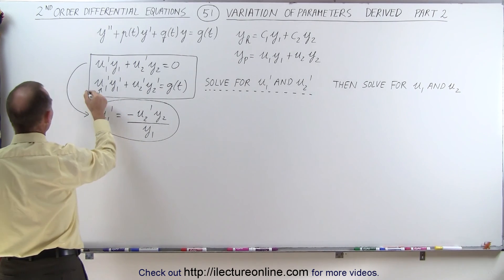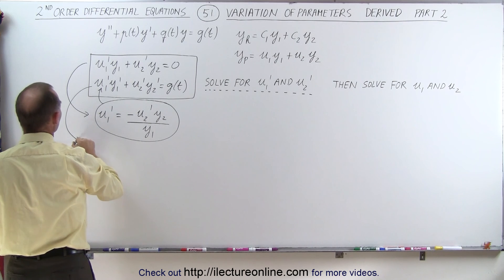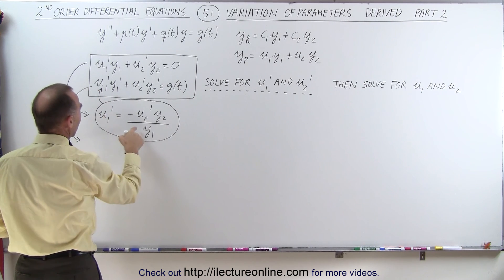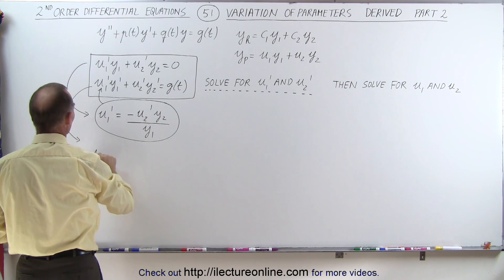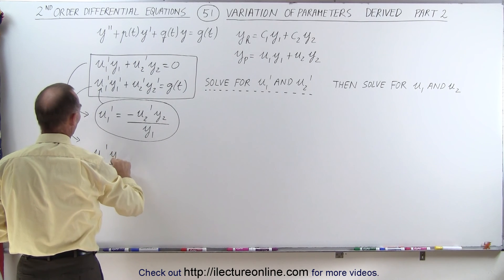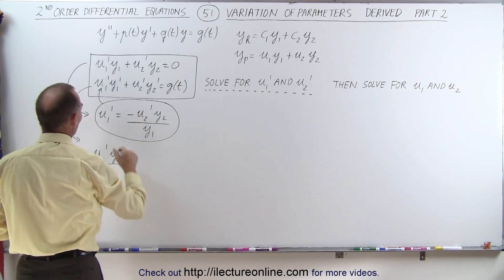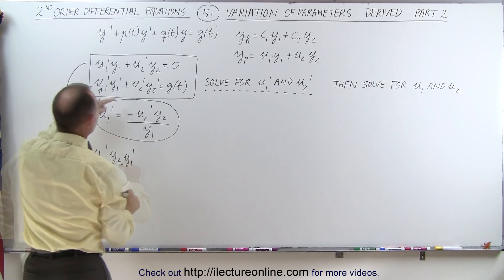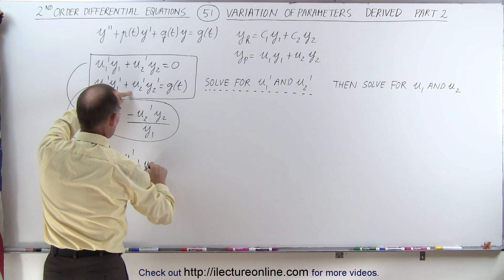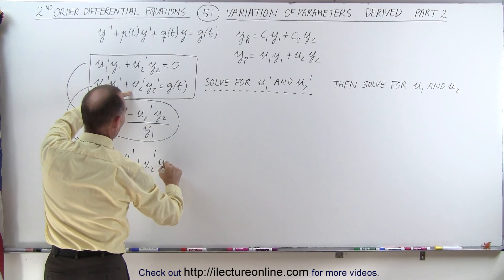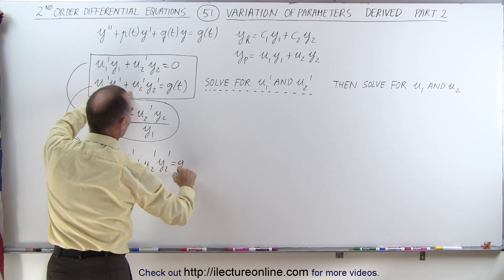So when we do that, the second equation becomes as follows. Instead of writing u1', we write this: minus u2' y2 divided by y1 times y1'. And then here we have plus u2' times y2', which is equal to g of t.